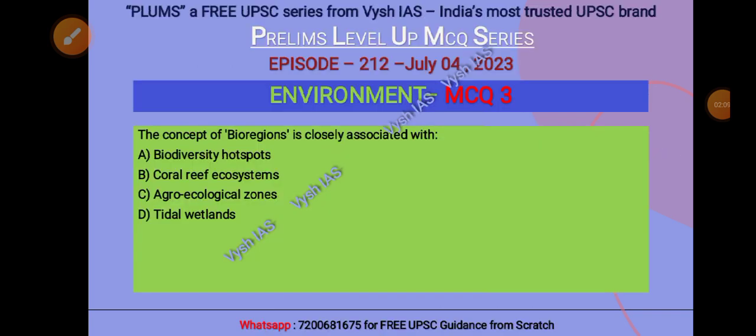Third question: the concept of bioregions is closely associated with what? Options are: A) biodiversity hotspots, B) coral reef ecosystems, C) agro-ecological zones, D) tidal wetlands.